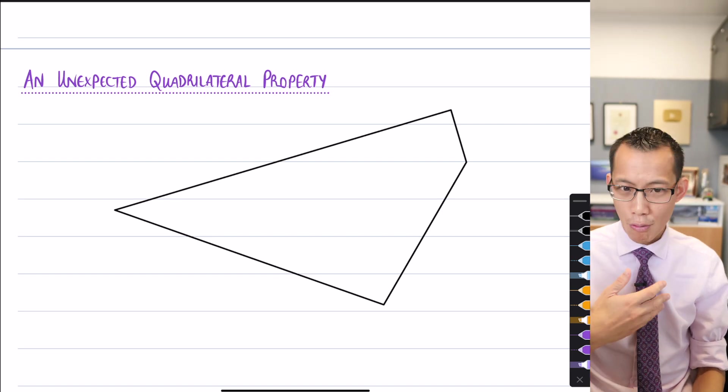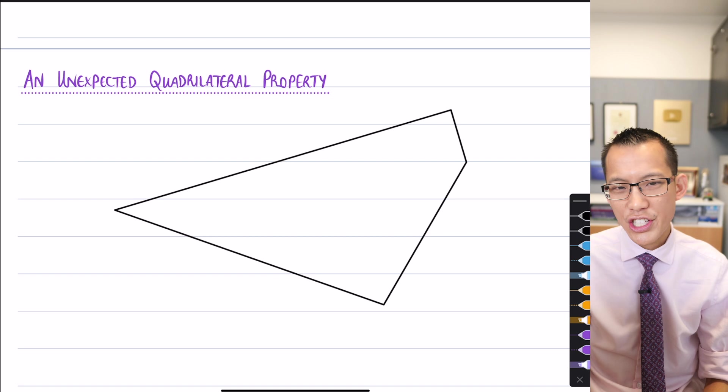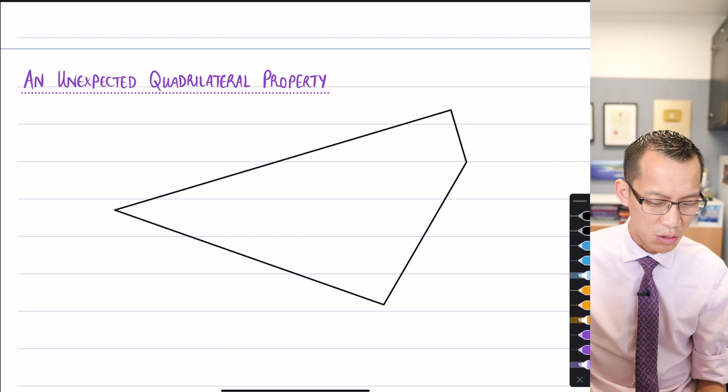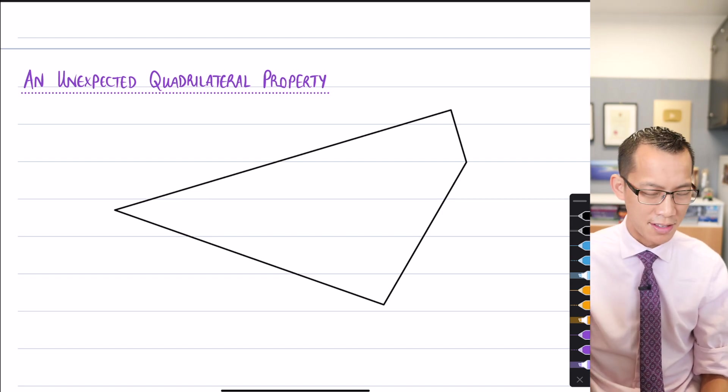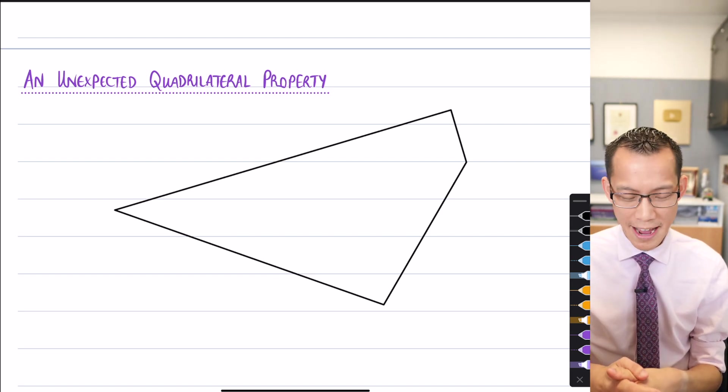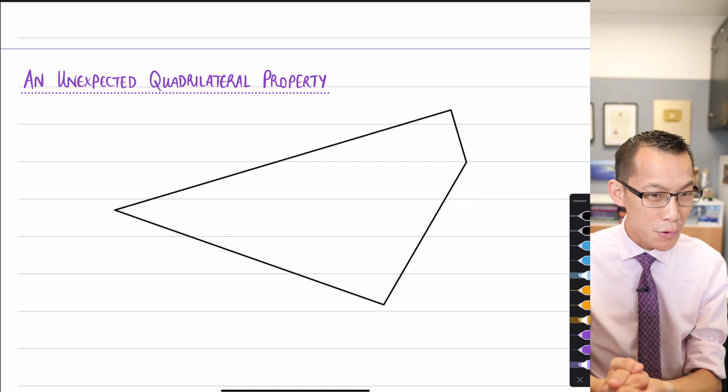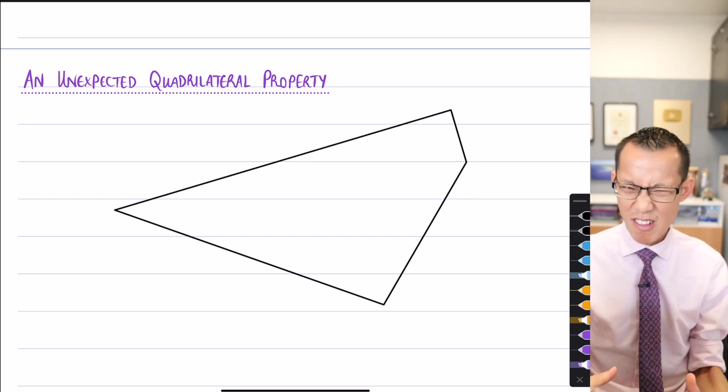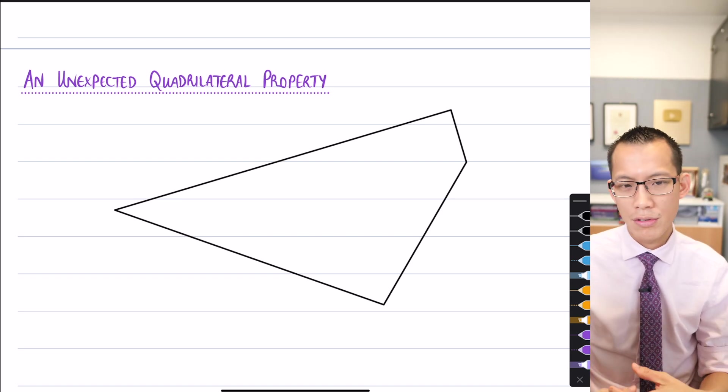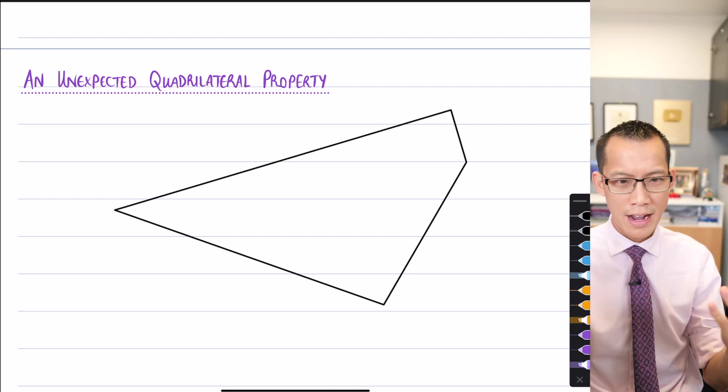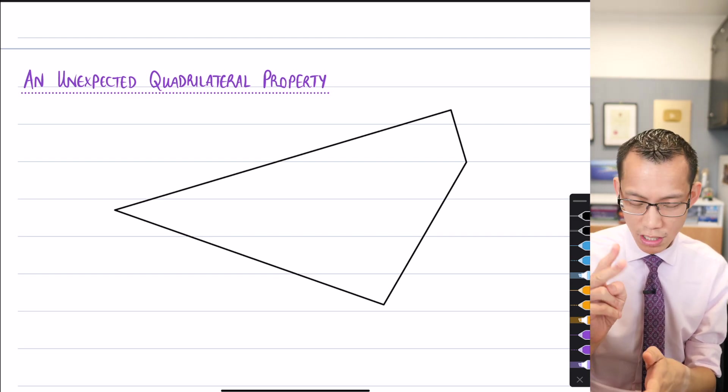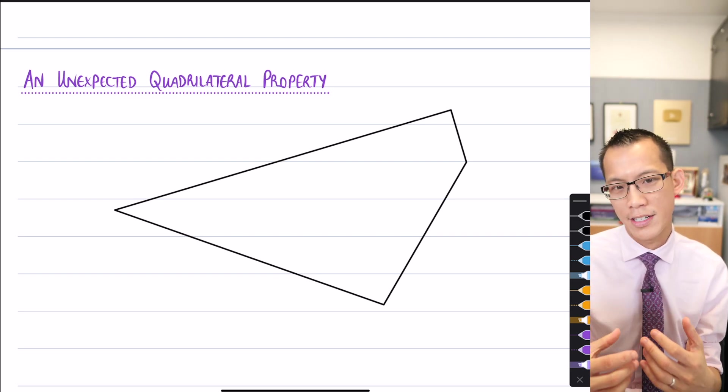Now if you draw a random quadrilateral, you kind of would expect that it doesn't have any special properties, except for the fact that the angles add up to 360 degrees because there's a couple of triangles that you can fit in there. However, we're going to explore an unexpected quadrilateral property today, and we're going to prove that it's true using vectors. And that's really what this idea is about in the syllabus. Can you prove things? We're going to do two deductive geometry proofs today, and they're both going to be using vector thinking.